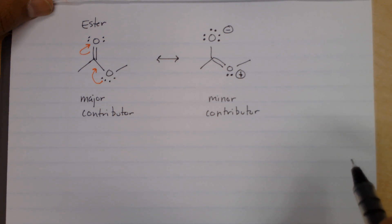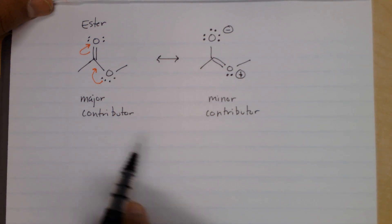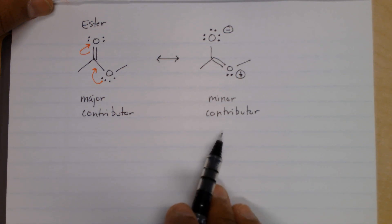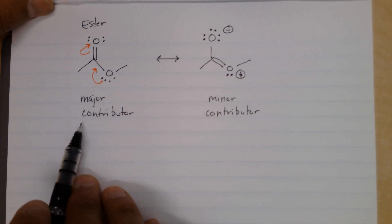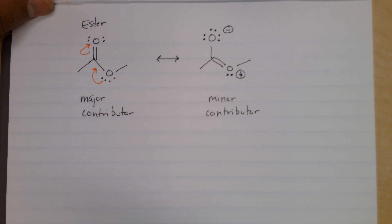Here we do have formal charge. So this is a valid resonance structure. However, they're not equally as stable. This would be the major contributor. This would be the minor contributor.